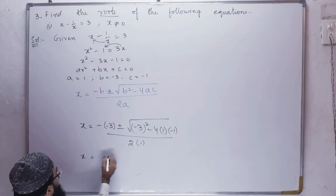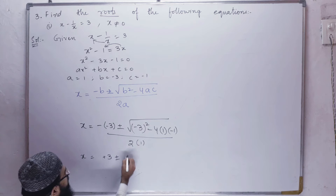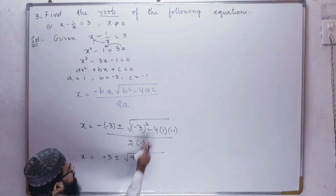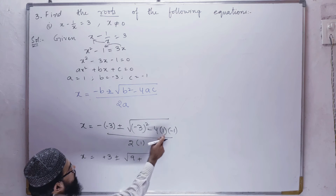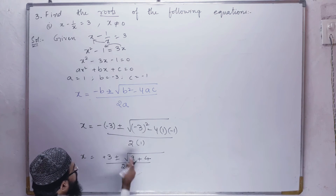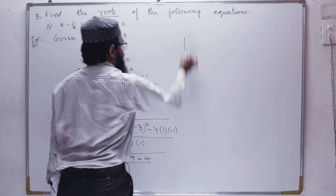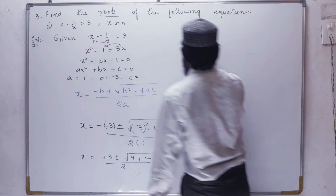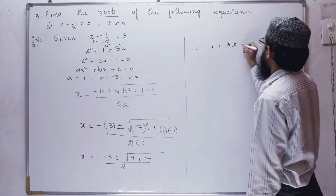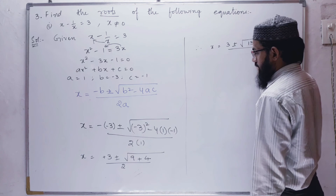So x equals minus of minus 3, which is plus 3, plus or minus under root of minus 3 squared is plus 9, minus into minus gives plus 4, divided by 2a which is 2. Therefore, x is equal to 3 plus or minus under root of 9 plus 4, that is 13, divided by 2.